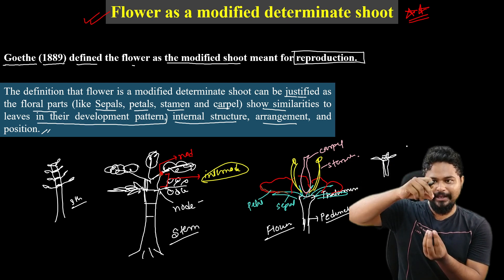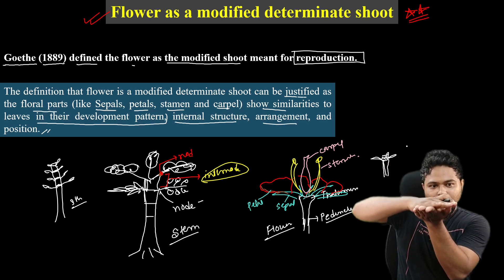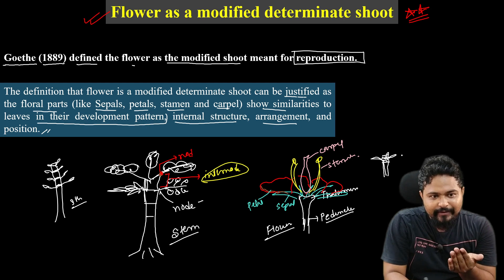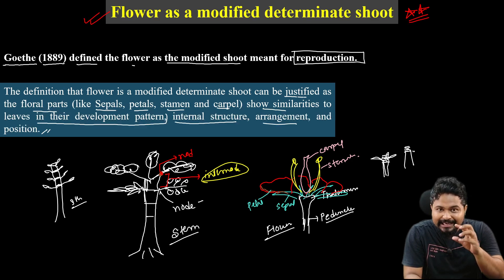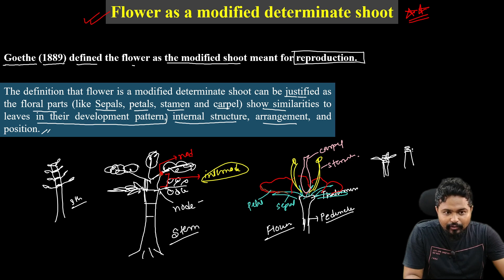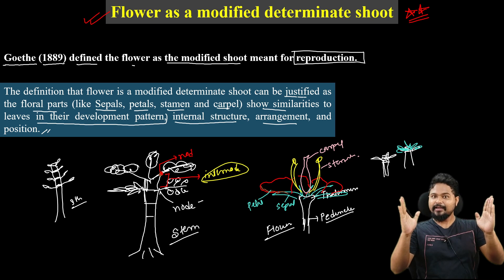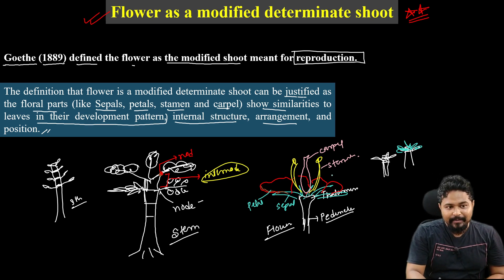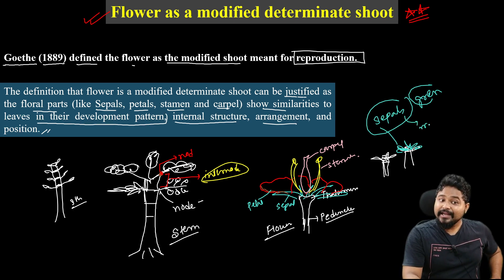If you compare the stem and the flower, you'll notice that both have nodes and internodes. The stem has an elongated form with nodes and internodes, where different parts like leaves and branches emerge.